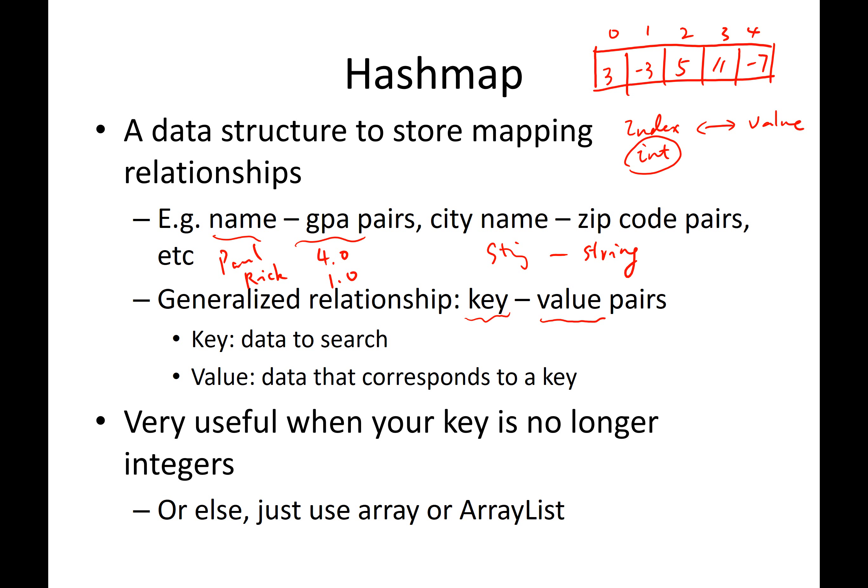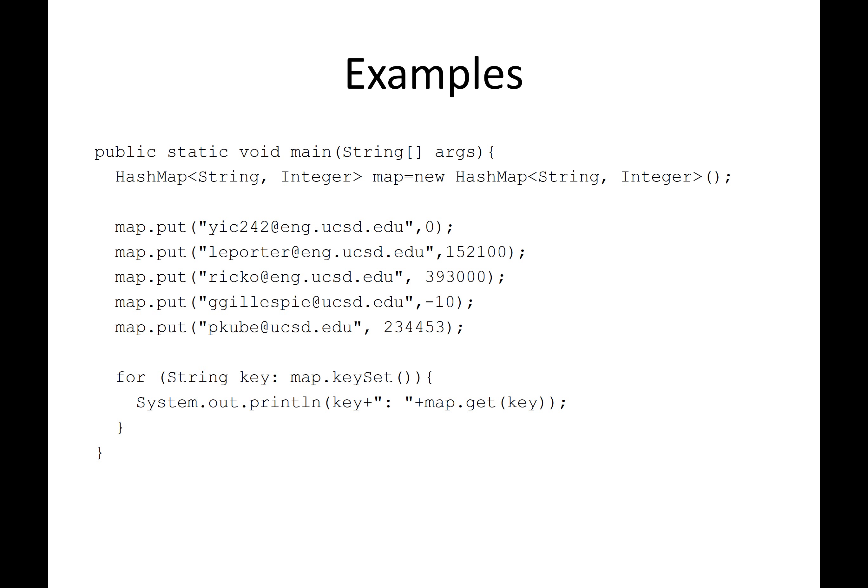But if your key is an integer, sometimes people just use array. But sometimes even if your key is integer, people still use HashMap if you have to look up a lot from this data structure. So this is HashMap, you can just treat it like a generic array in a sense. So here's one example. The way you can create a HashMap is you need to import java.util. And you can just import star here. Because there are different kinds of maps. And in this class, we only focus on HashMap.